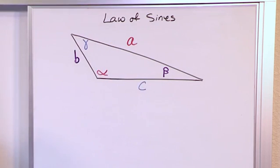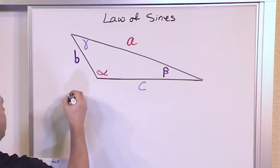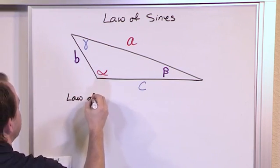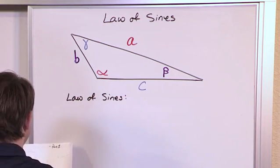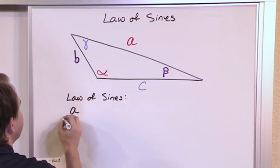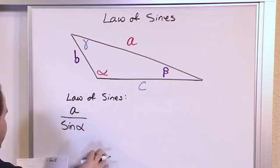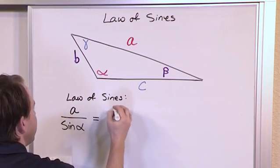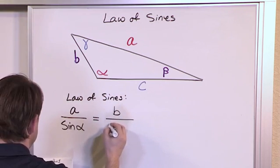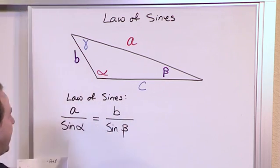The law of sines is very simple to write down and it says the following. The side a of this triangle divided by the sine of the angle alpha is equal to the side b of this triangle divided by the sine of the angle beta.